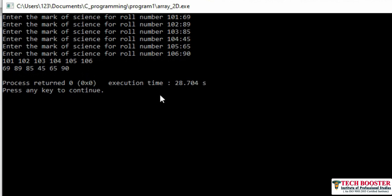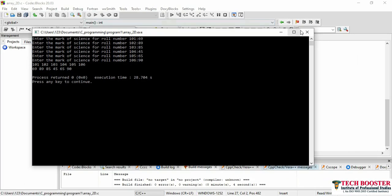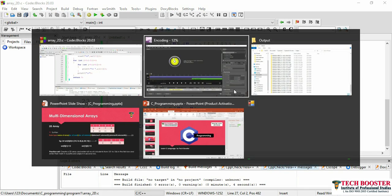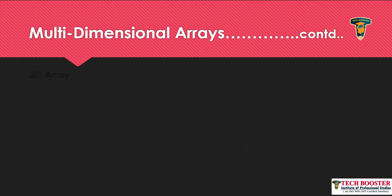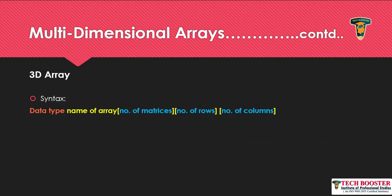That's how you create a 2D array. Now let's look at 3D arrays. Although in most cases you won't use 3D arrays on a regular basis, you may need to use 3D, 4D, or 5D arrays in the future. When we talk about a 2D array we have 2 axes — x and y. For a 3D array, we add another axis: z.